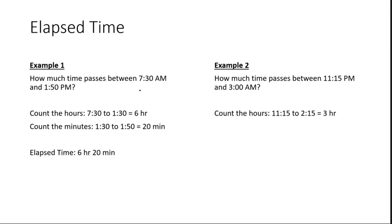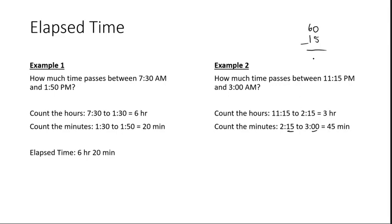Then we count the minutes from 2:15 to 3 o'clock. 15 minutes plus an additional 45 minutes takes you to 3 o'clock. If you can't do that in your head, realize that there are 60 minutes in an hour. Think of 3 o'clock as 60, and this is 15 minutes. So we subtract 60 minus 15, and that gives you 45. So the elapsed time would be 3 hours and 45 minutes.